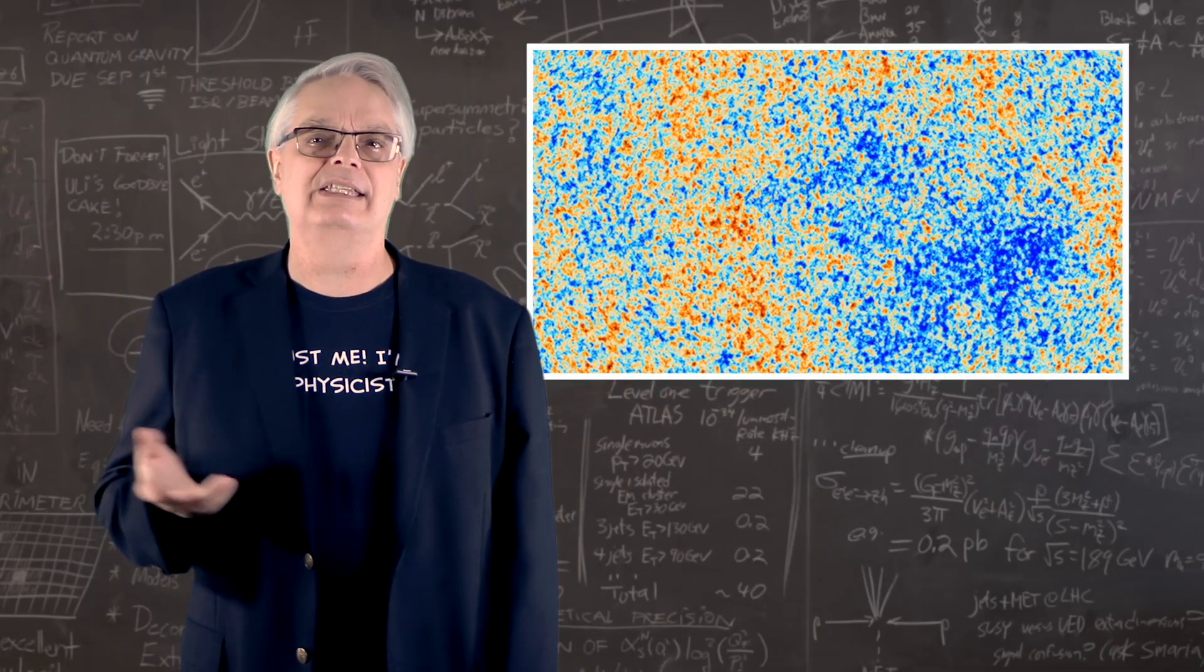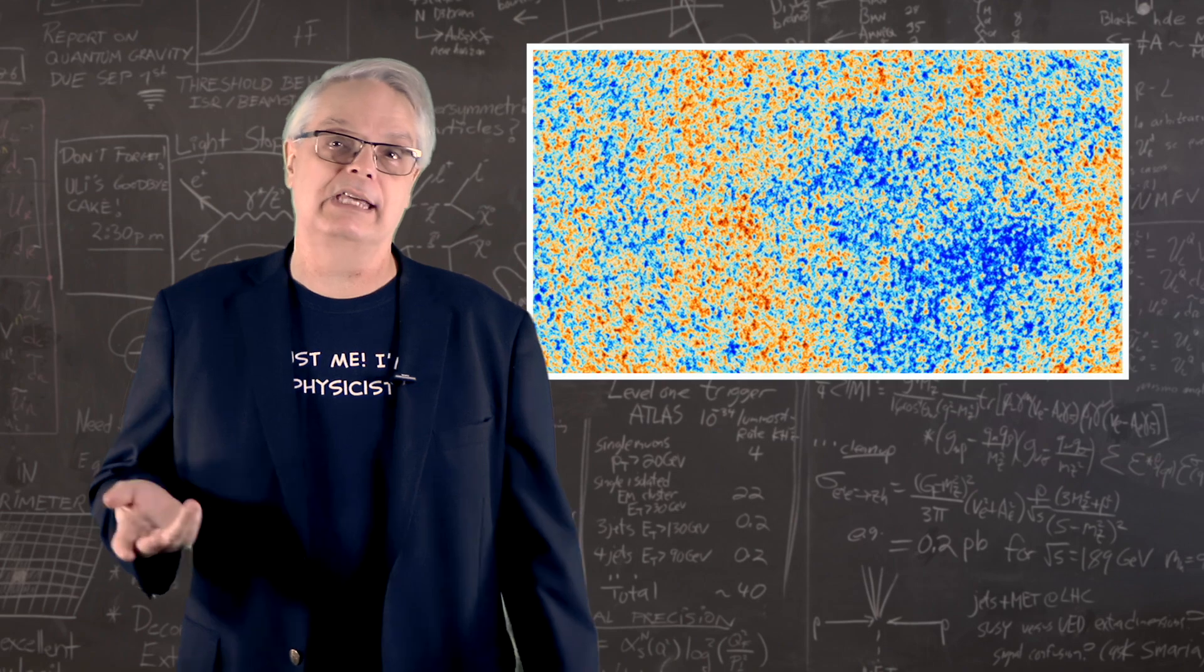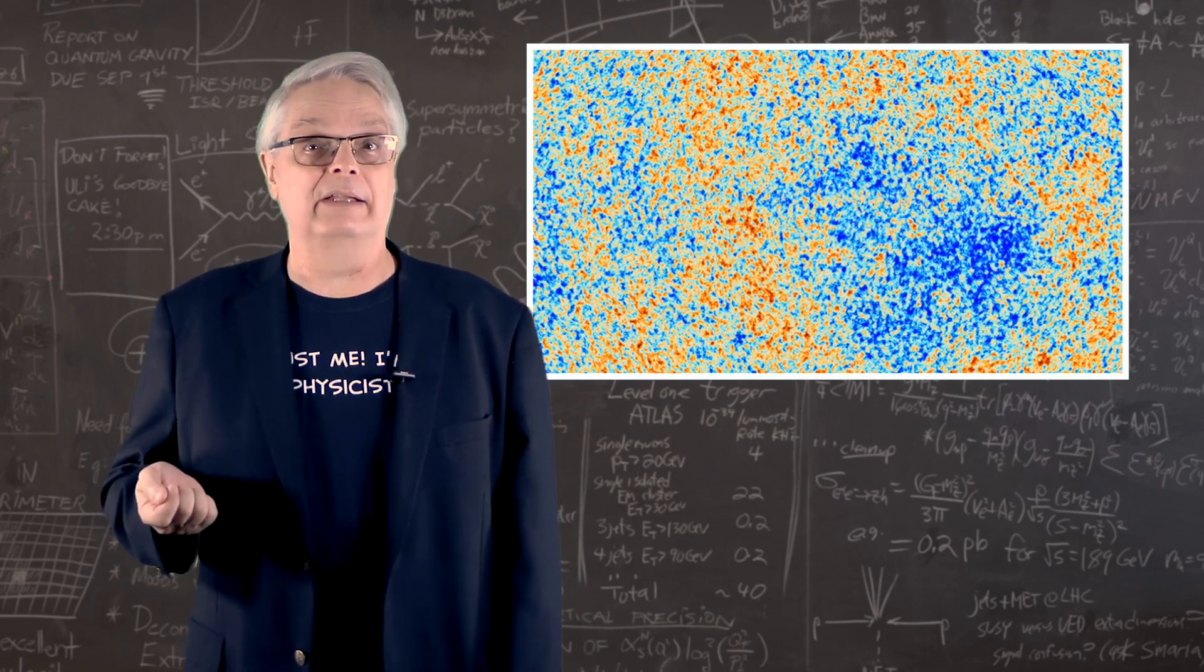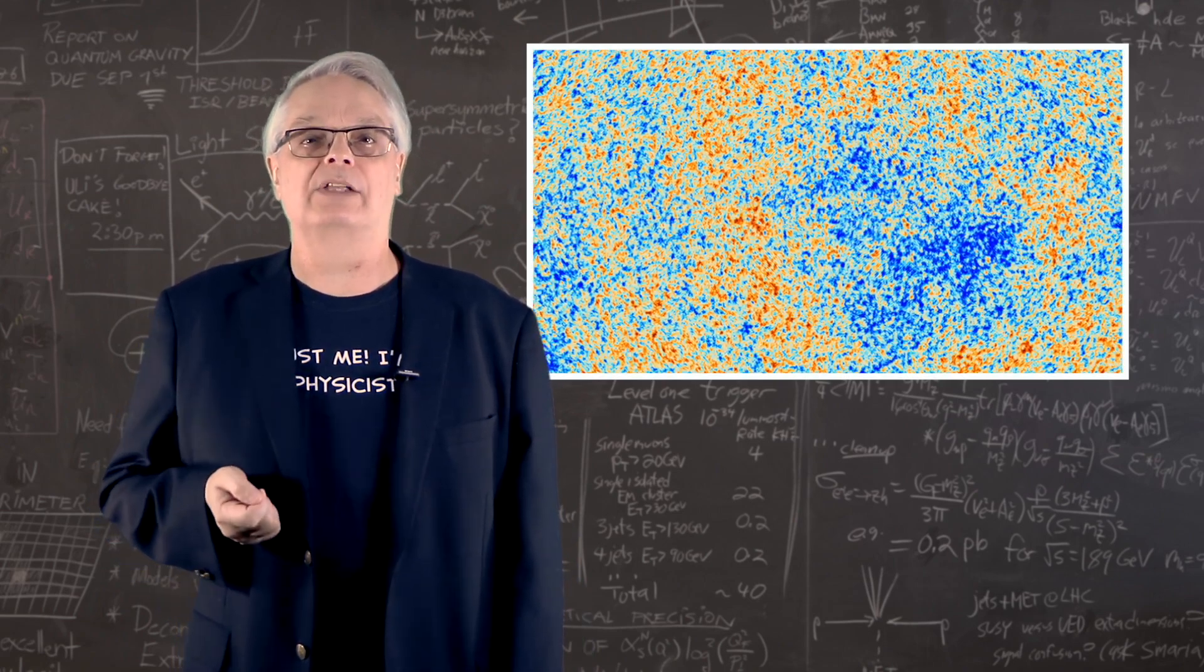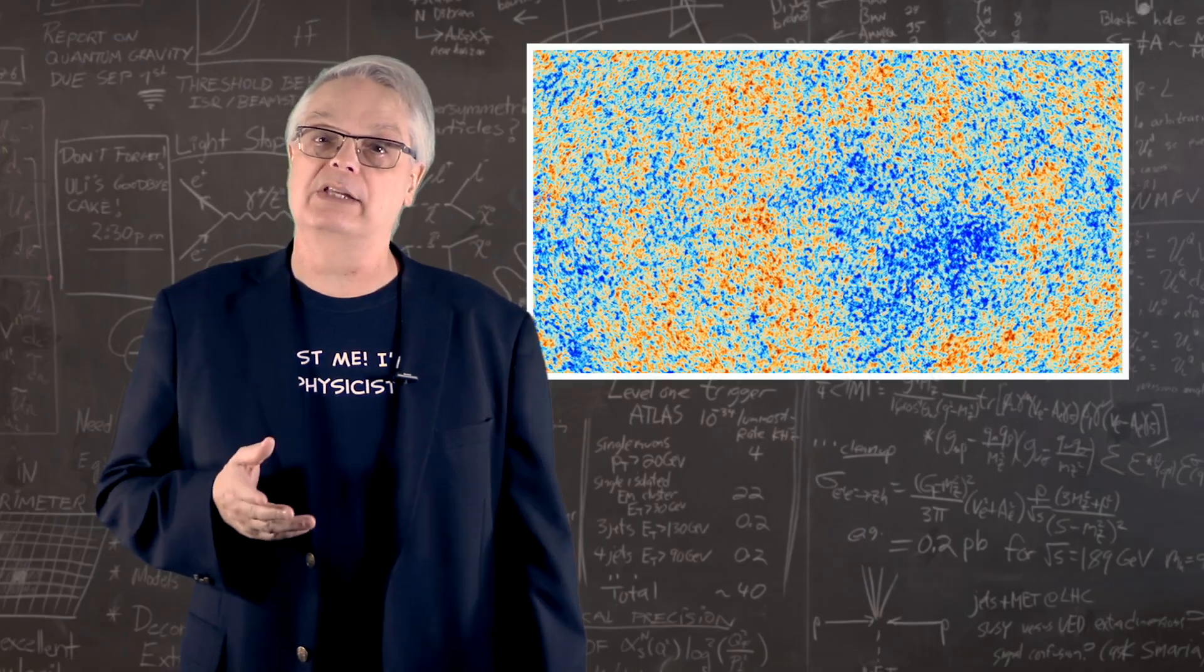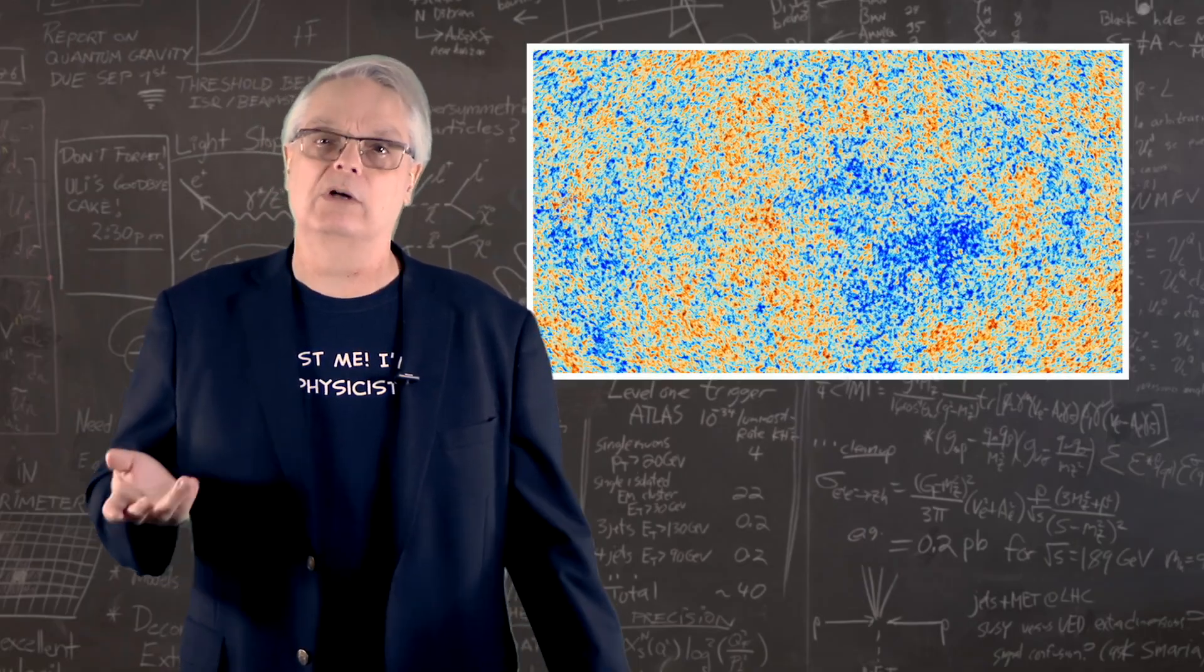Sound is just density variation in the material, in this case the plasma of the early Big Bang. The reddish-orange spots are locations where the plasma was denser and the bluish spots are where it was less dense.